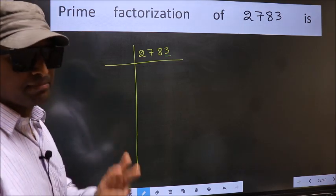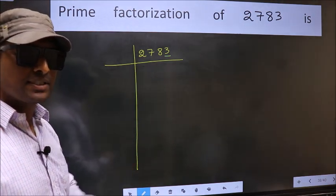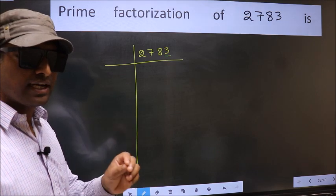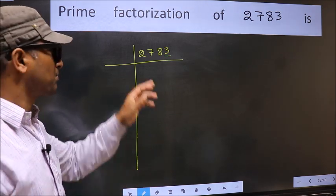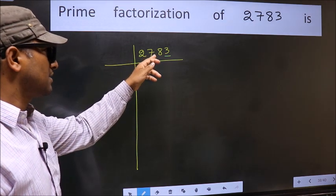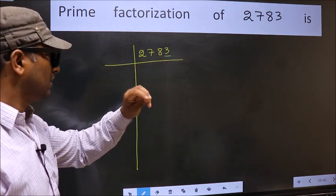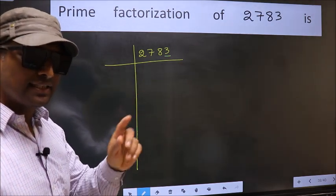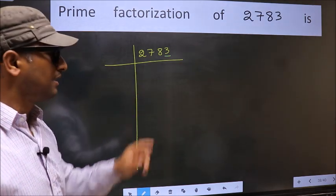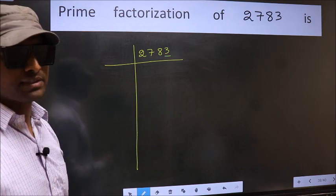Next prime number 3. To check divisibility by 3, we should add the digits. What I mean is 2 plus 7 plus 8 plus 3, we get 20. And 20 is not divisible by 3. So this number is also not divisible by 3.